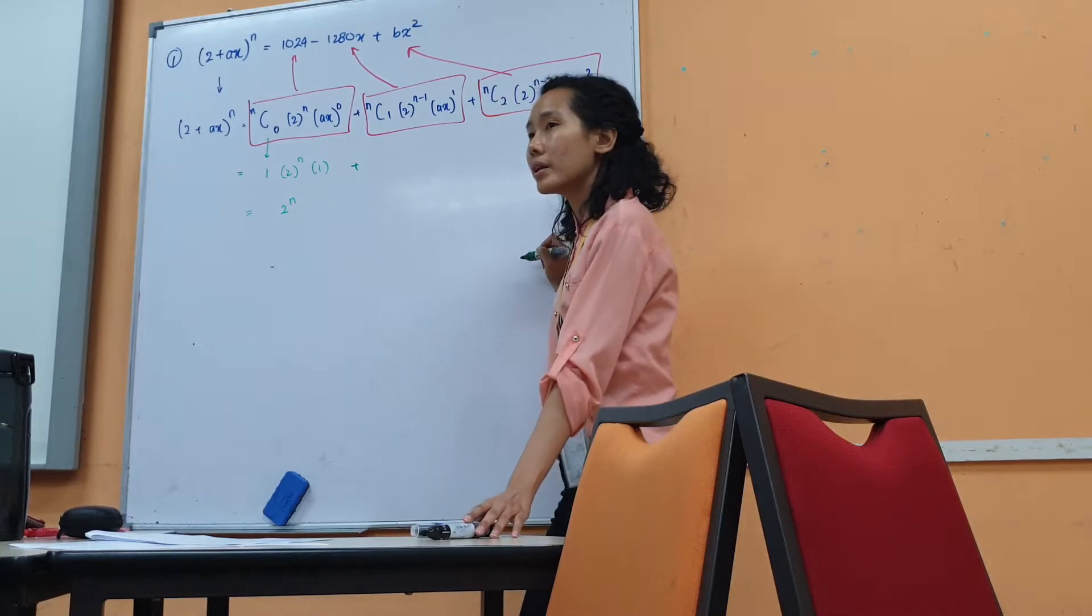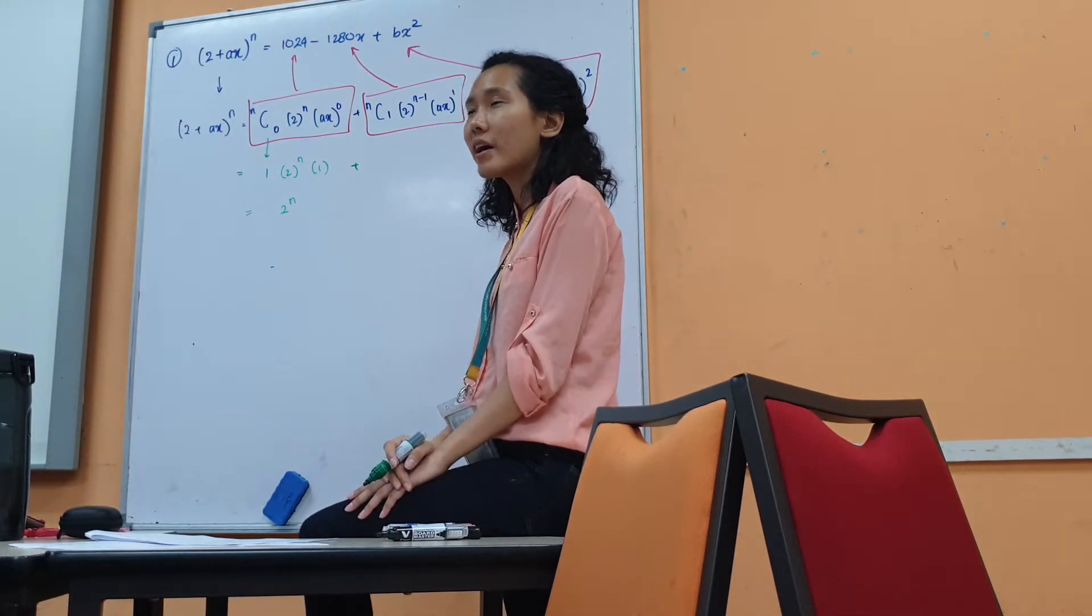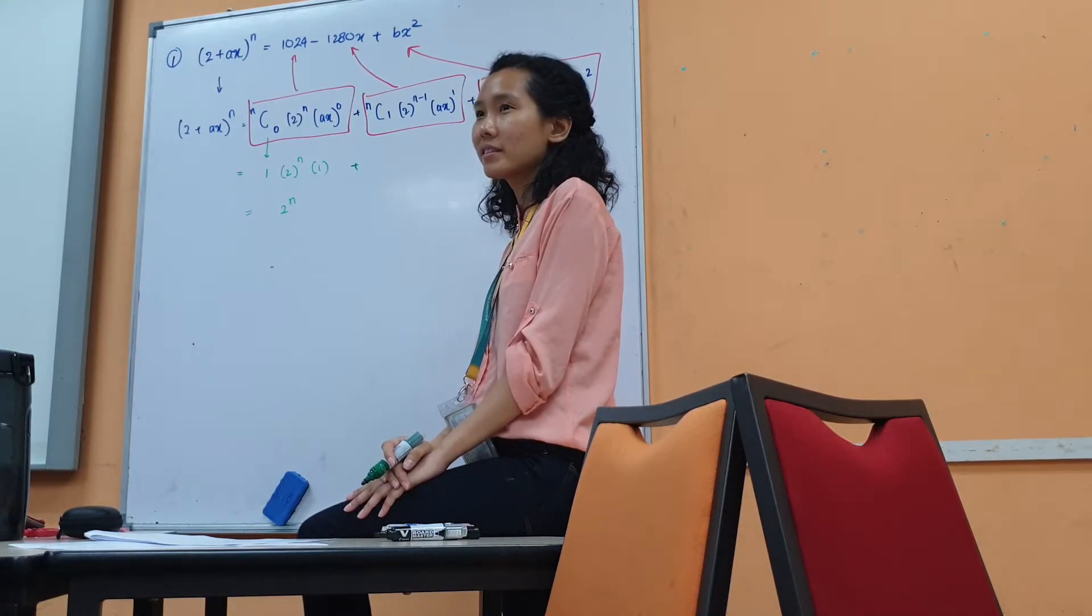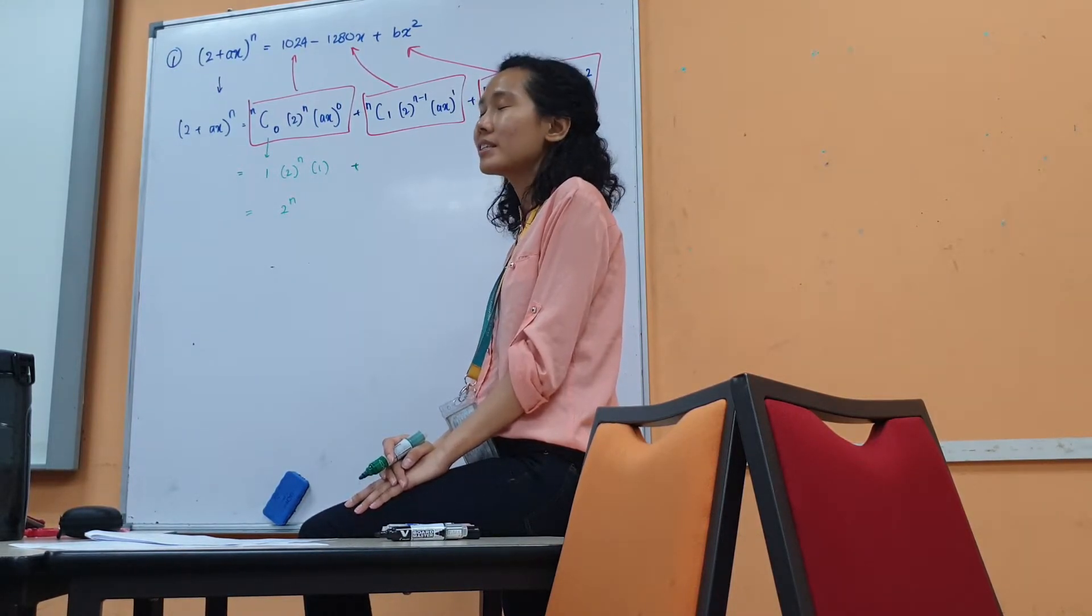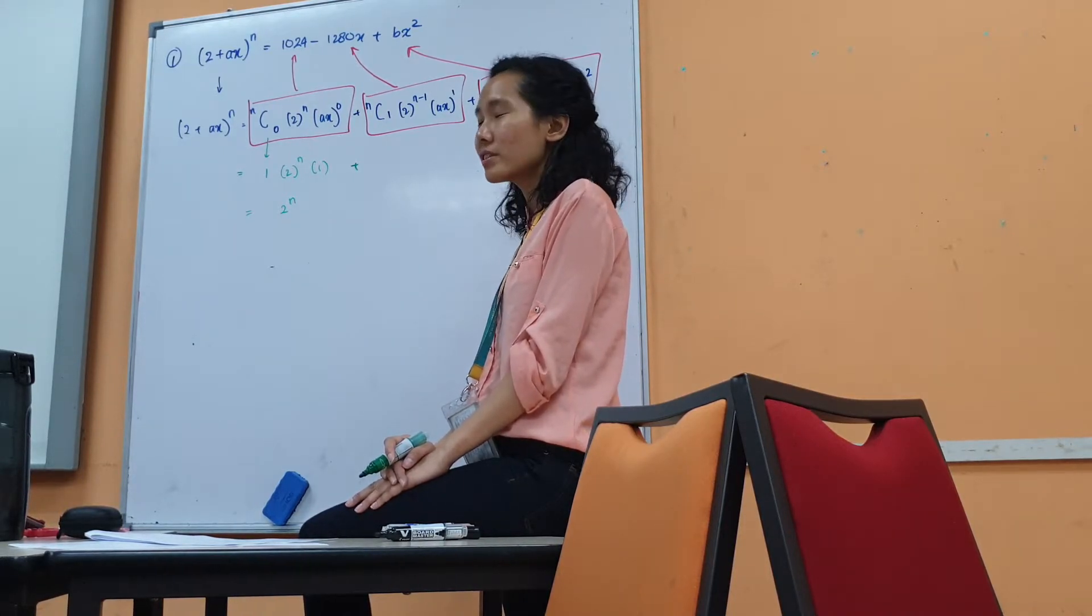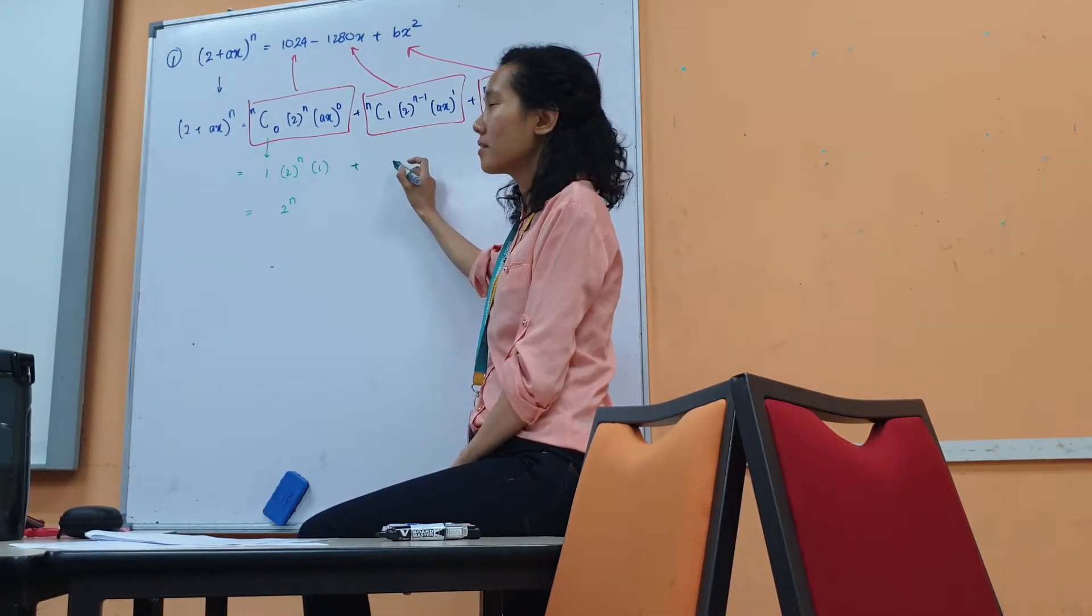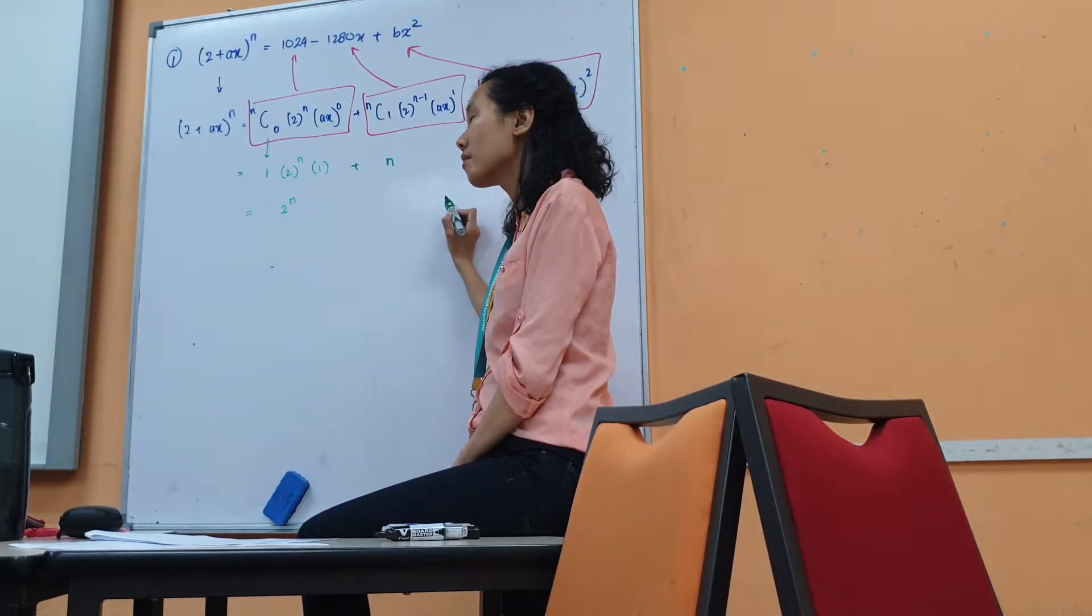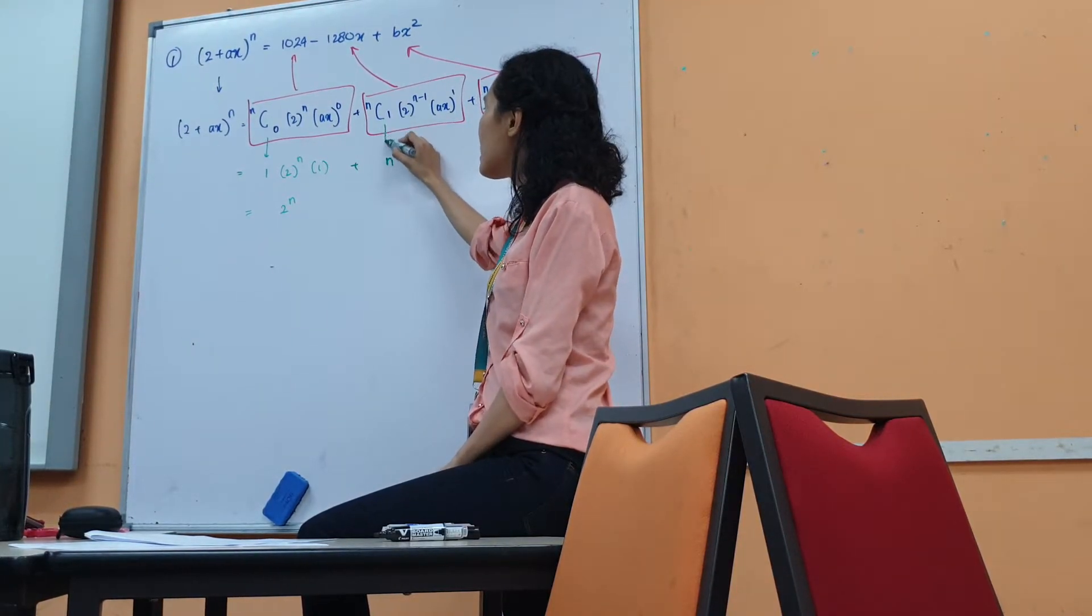Next. NC1 is what, Rekha? NC1 is N. Try it. 7C1, you get? 7. CC1, what do you get? Try it, 6C1. 6. 100C1? 100. So NC1 is N. Are you okay? Jeffrey can follow. NC1 is N.